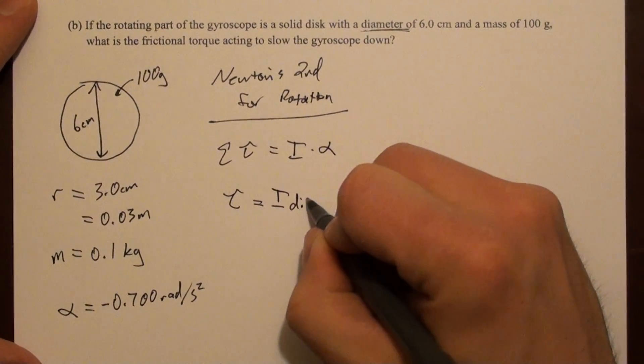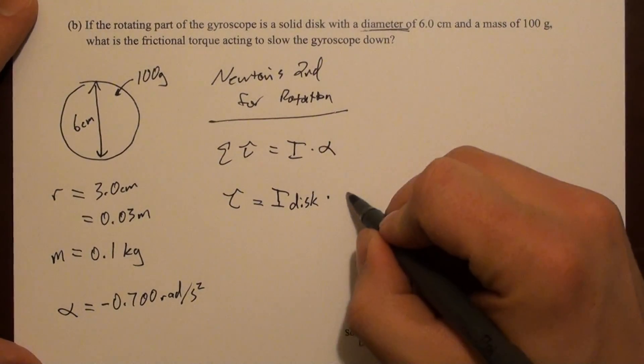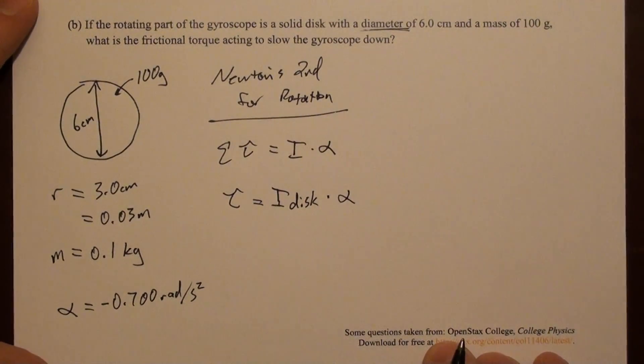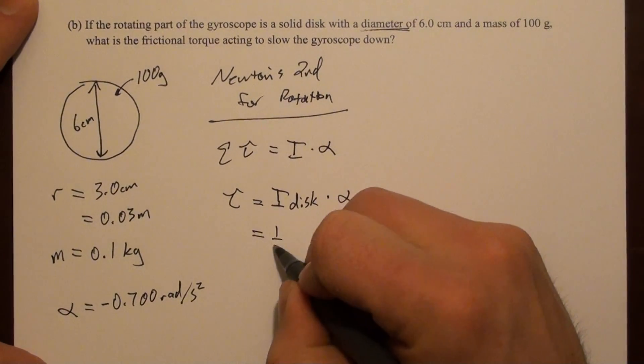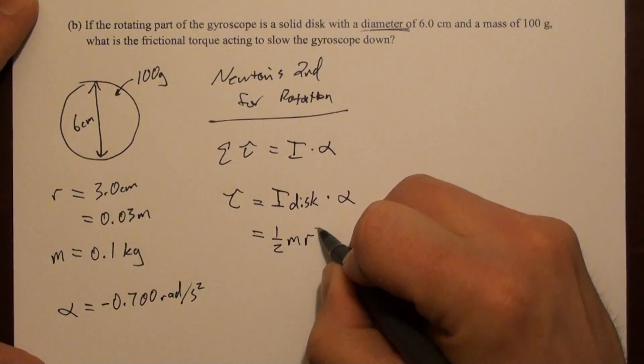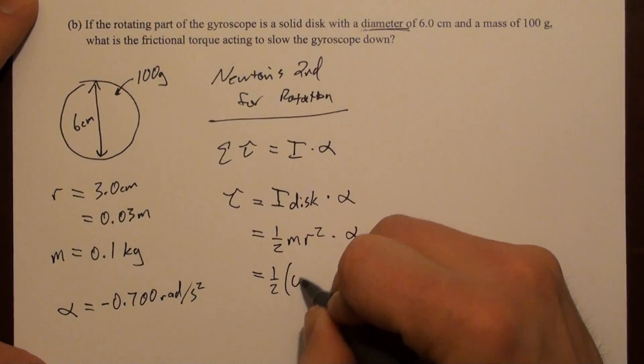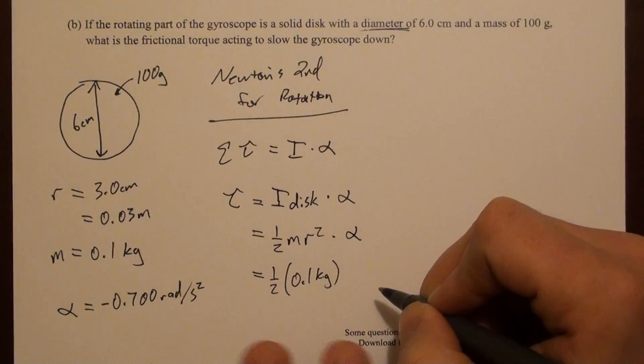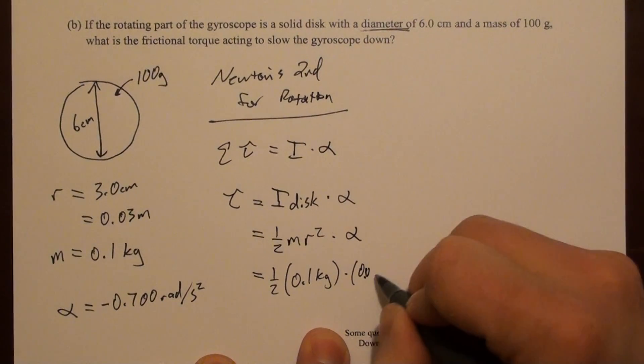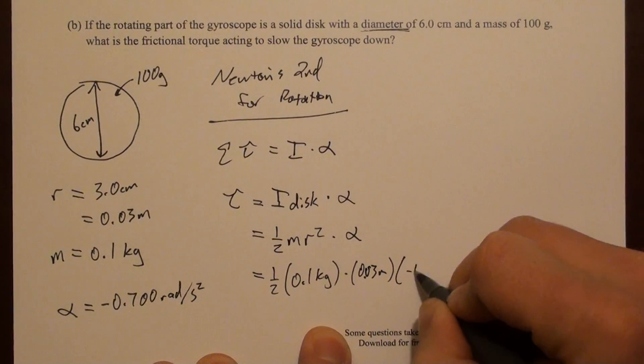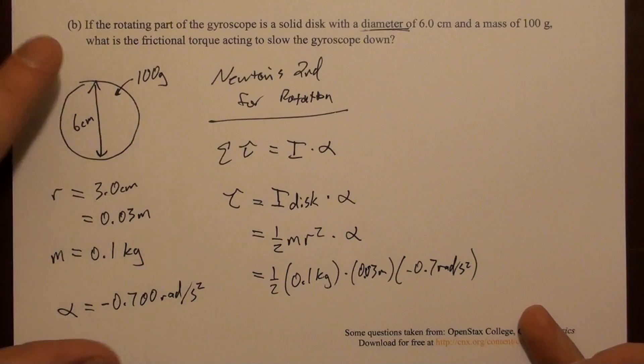So, in this case, we're going to assume that the only torque acting is this frictional torque. Alright, we're going to assume that we're not spinning it in any other way. We're not pulling on it in any way. So, the only torque that we need, this is what we're solving for, is I alpha. This is I, in this case, for a disc, because that's what we're assuming this is, a solid disc, times the alpha that we have. So, a disc has a moment of inertia, which is one-half m r squared. Alright, so I can plug some numbers into that, one-half times 0.1 kilograms, times 0.03 meters, times this acceleration.